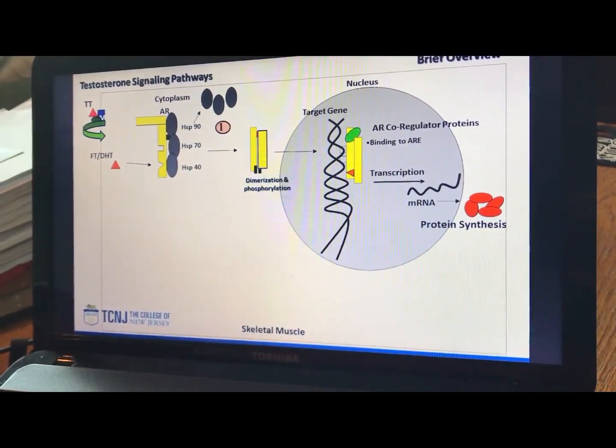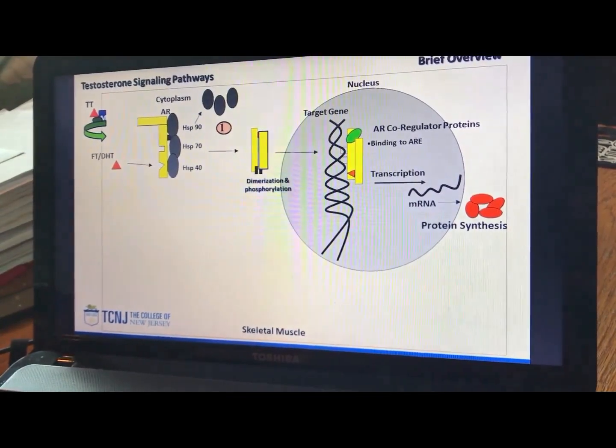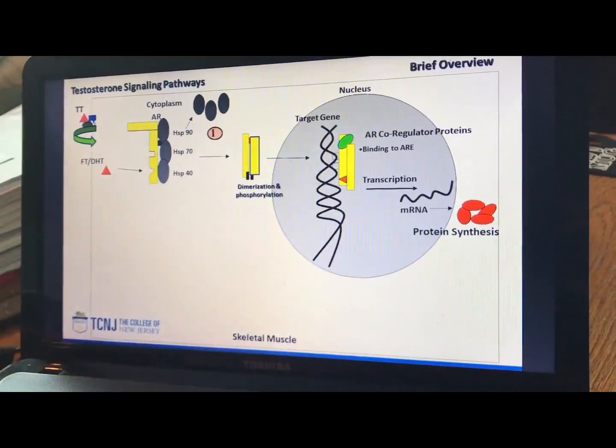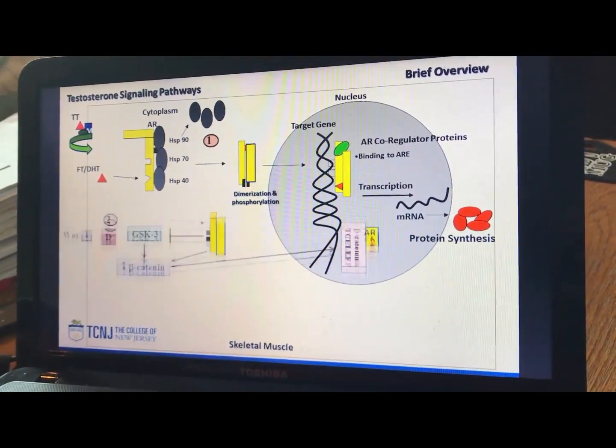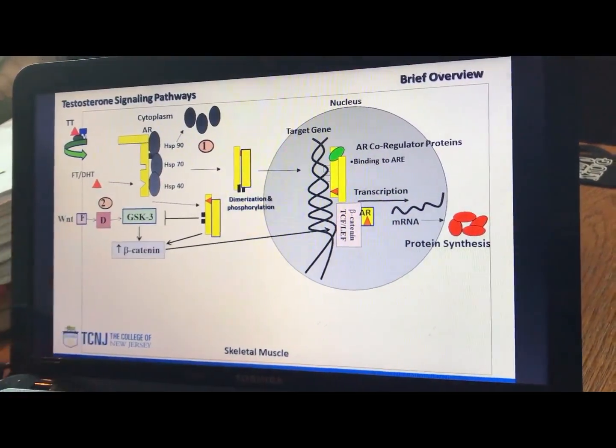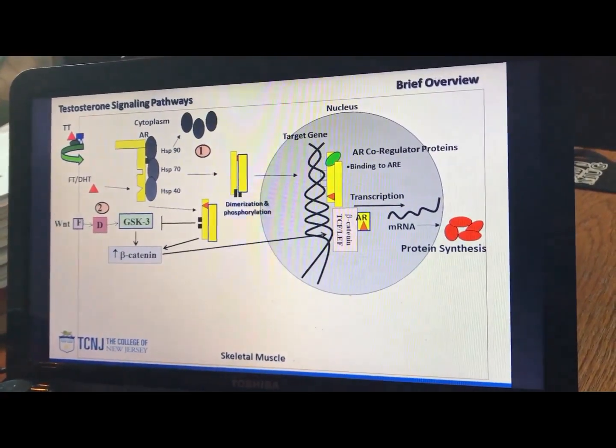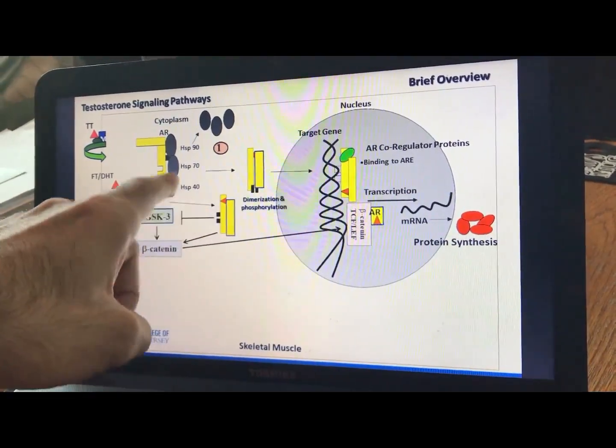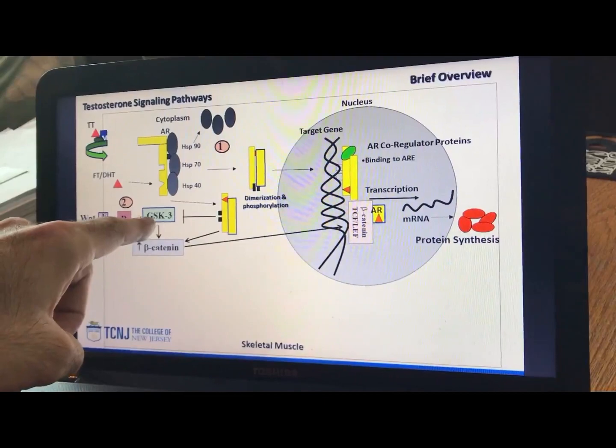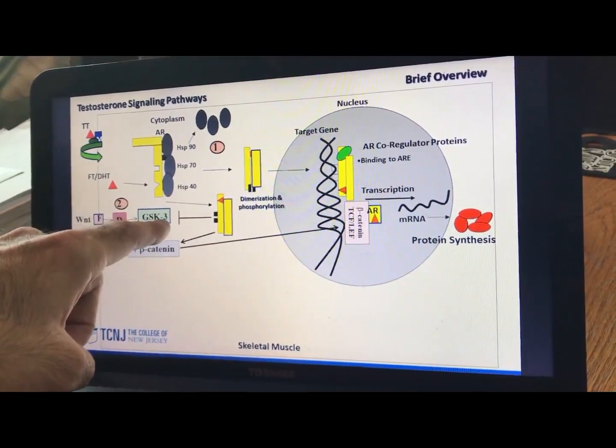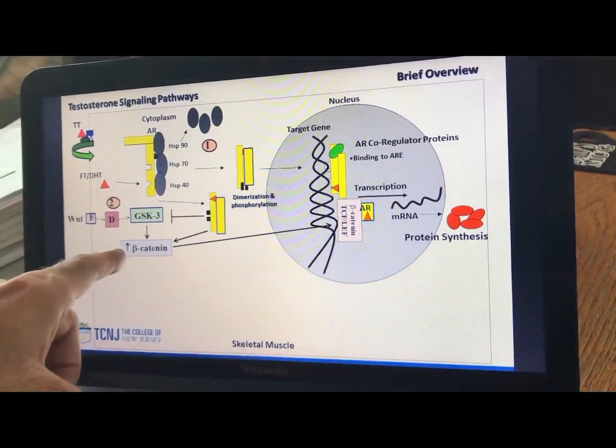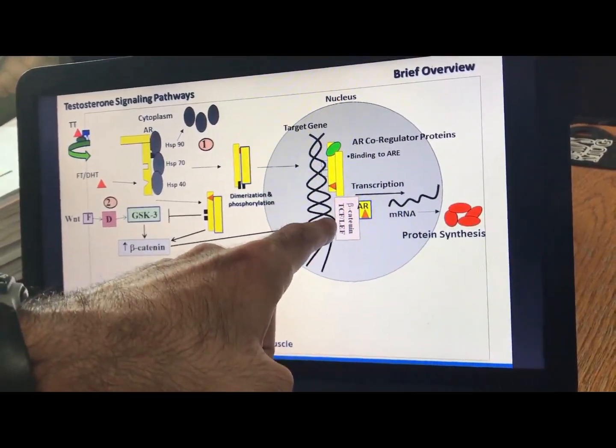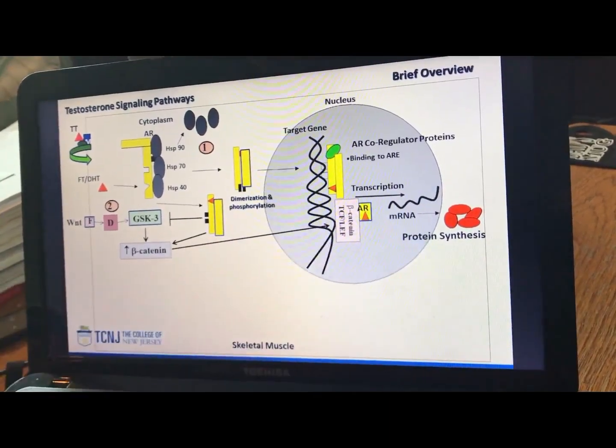The androgen receptor itself, when it's phosphorylated, it becomes more active as well. So there are other molecules that can phosphorylate it internally, which can change its transcriptional activity as well. Number two is known as the beta-catenin signaling pathway. And there's a couple of things going on here. Here's your androgen receptor bound testosterone complex. It can block glycogen synthase kinase 3, which then creates more beta-catenin to bind. And beta-catenin is a transcription factor, which targets different genes, but still produces proteins.